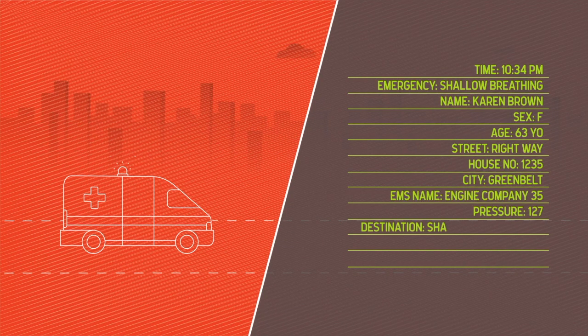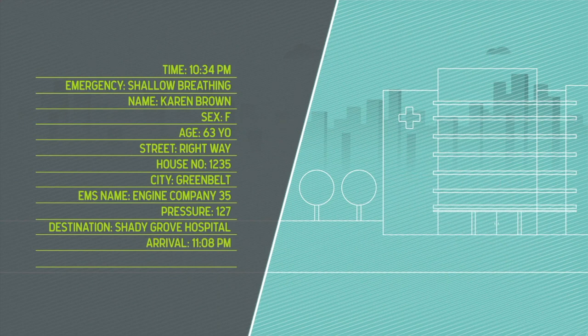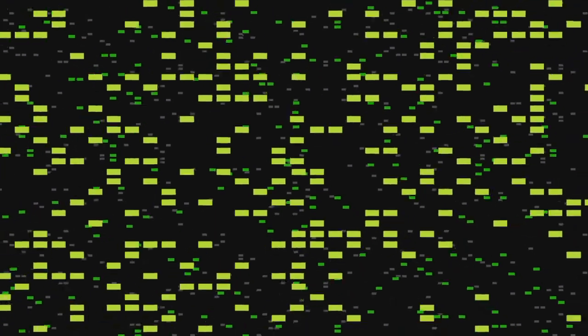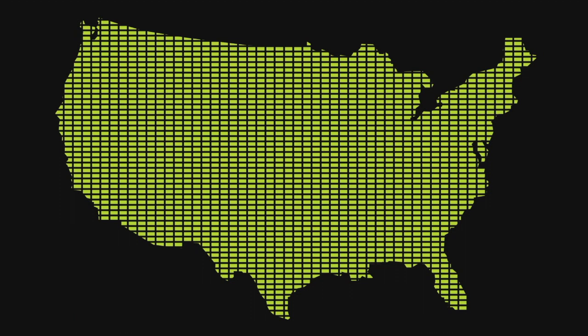In addition to contact information, EMS and hospital staff add health information to Karen's medical record as they treat her. Most of this data is PII, or personally identifiable information, which is key to a person's identity. This information is stored in large databases all across the country.